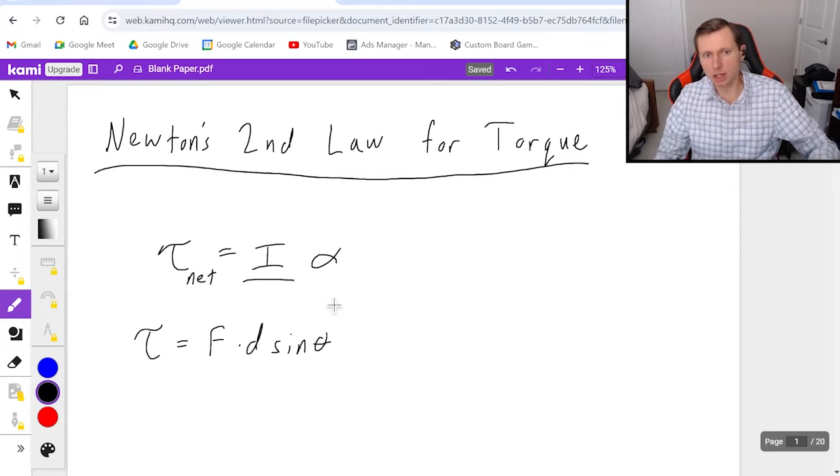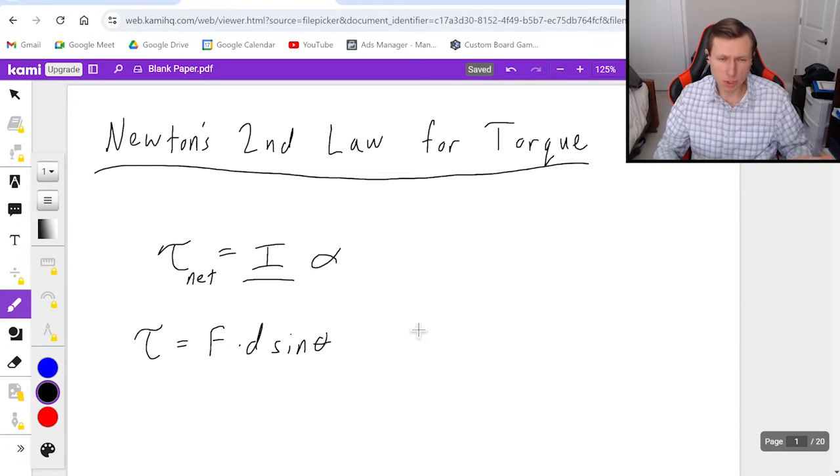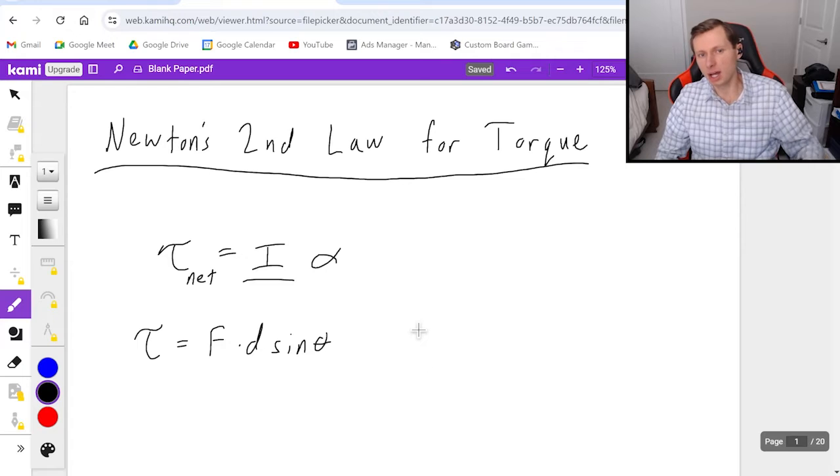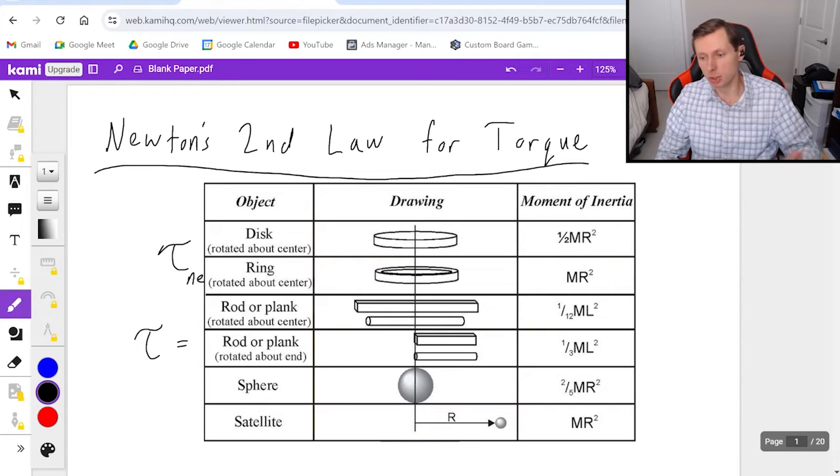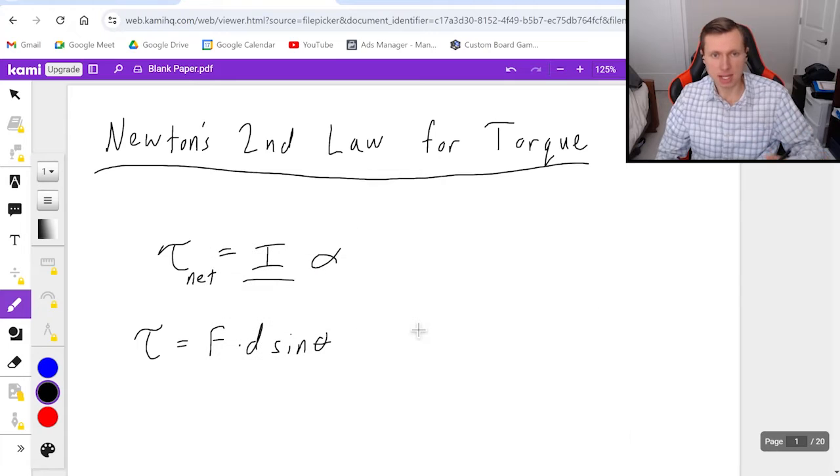I is the moment of inertia, which describes how easy or difficult it is to turn something. Usually, they give it to you in the problem. If not, we have a whole table of equations that you can use to find moment of inertia, depending on what shape it is. And then alpha is the angular acceleration. So let's go ahead and get started.